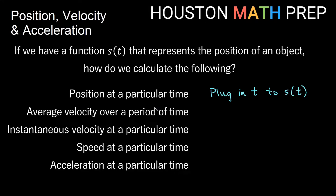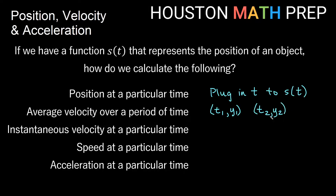To find the average velocity over a period of time, we'll have two different t values — t1 and t2. We plug those into the position function to get two points, and then we simply find the slope of the line between those points. This is what we call the slope of a secant line.